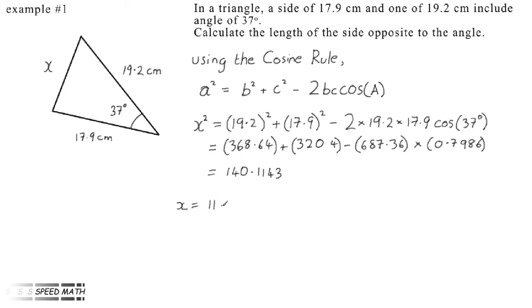So taking the square root, x is equal to 11.8349. So we have our answer. The opposite side to two decimal places is 11.84 cm.